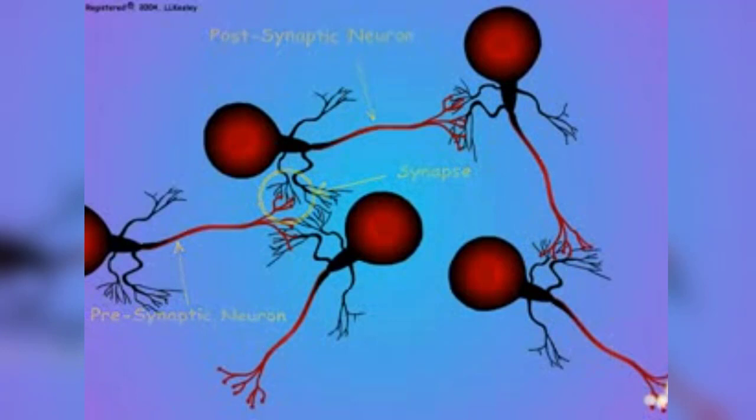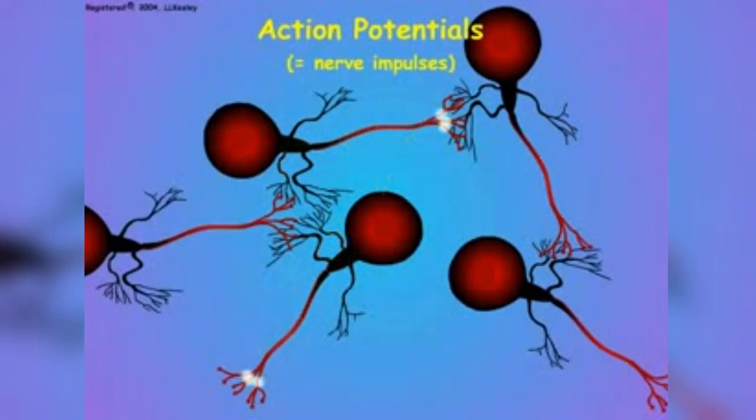Information is encoded and transferred in the nervous system as action potentials. Action potentials are discrete regions of negative depolarization that are propagated actively along the axon membrane.